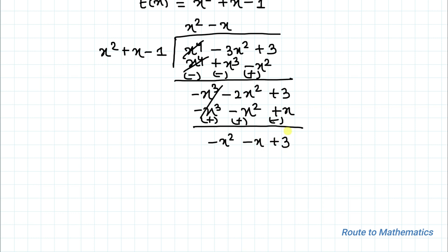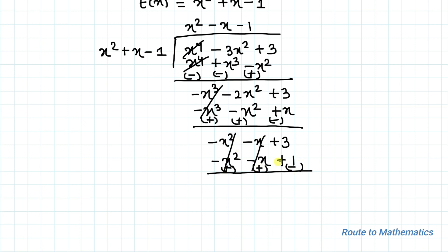We multiply again by -1, giving -x² - x + 1. Taking opposite signs: negative becomes positive, positive becomes negative. The two x² terms cancel, the two x terms cancel, and 3 - 1 gives 2 as our remainder.